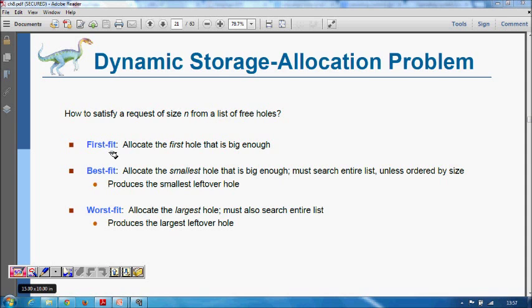How do we allocate memory locations to incoming processes? There are a few algorithms. First fit: allocate the first hole that is big enough - we search from the beginning and whichever hole is found which is bigger than the process requirement, we allocate it. Best fit: allocate the smallest hole that is big enough for that particular process, so you need to search all the holes.